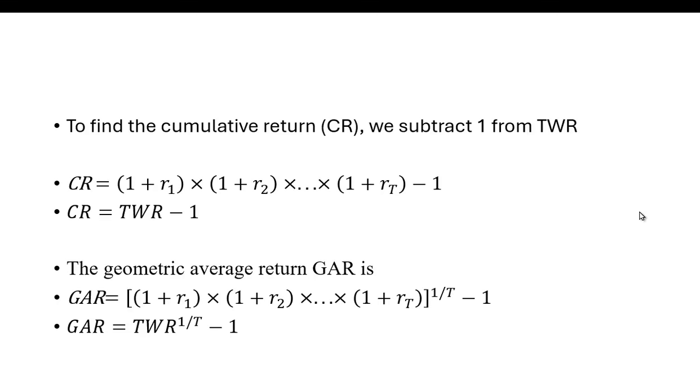So you're familiar with the arithmetic average where we add up the number of observations. If we wanted to find the arithmetic average for these returns, we just add r₁ to r₂ to r₃ etc. and then divide by the number of observations.